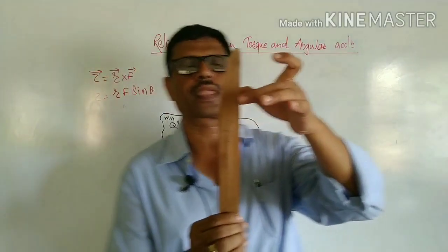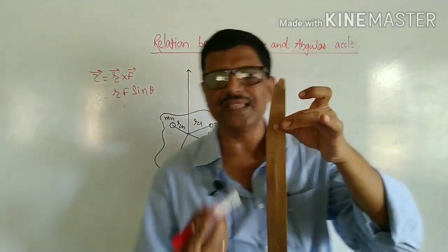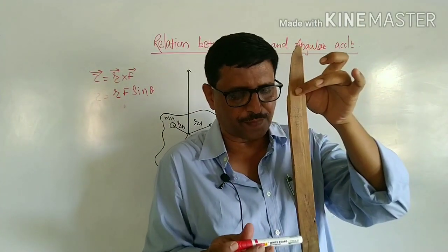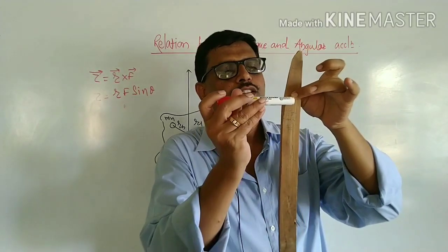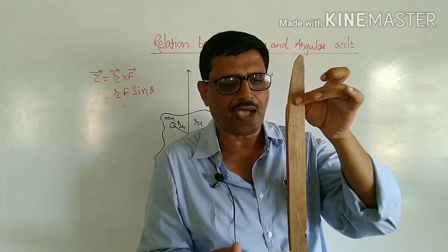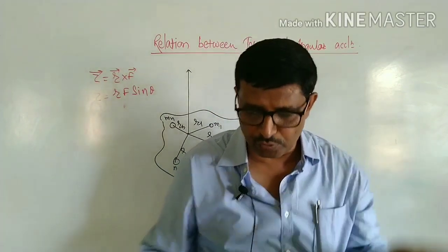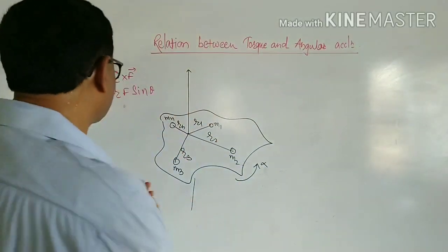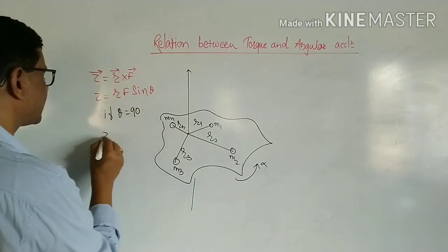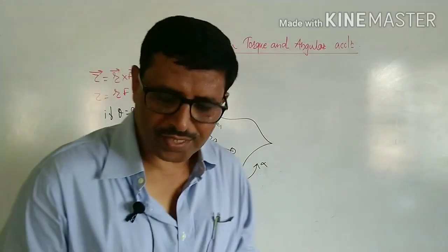In this case, let this metal strip be fixed about this point and a perpendicular force is applied on it. Then the distance from the axis to the line of action of force is the moment arm r, and here r and F are perpendicular to each other. In that case theta equals 90 degrees, so torque tau is equal to r into F, because sine 90 is one.